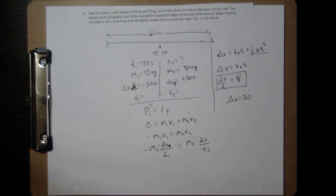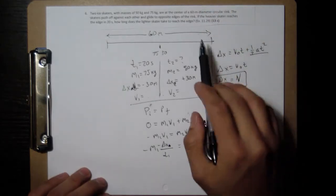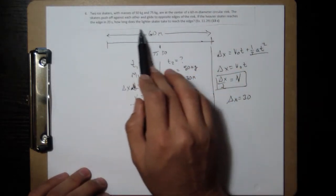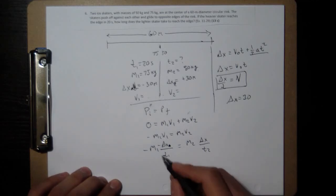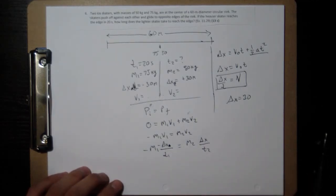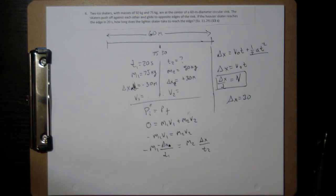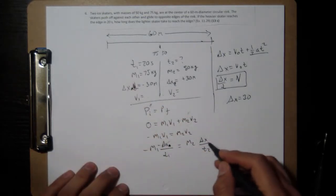What we're looking for, to remind ourselves, is how long does it take the lighter skater to reach the edge, which is t2. So I want to know what t2 is. And delta x is going to cancel out because it's the same number. That's why I wanted to write them without the one and the two, so I could just say hey, these cancel out.